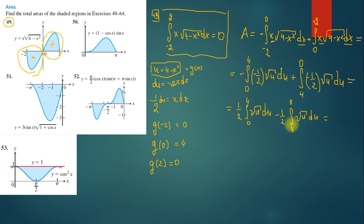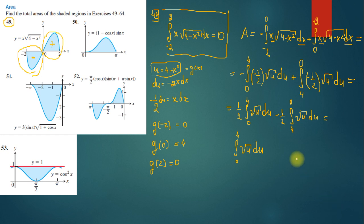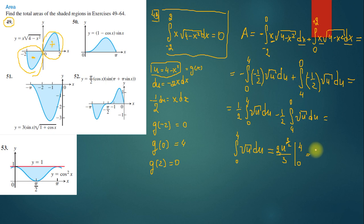By changing the endpoints of the second integral, I get a plus sign and the integral becomes from 0 to 4. Adding both parts gives exactly the same integral, so the total becomes: integral from 0 to 4 of √u du. This equals [u^(3/2) / (3/2)] from 0 to 4, which simplifies to (2/3)u^(3/2). Substituting u = 4 gives (2/3)(8) = 16/3.